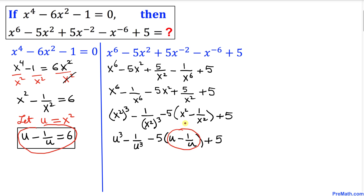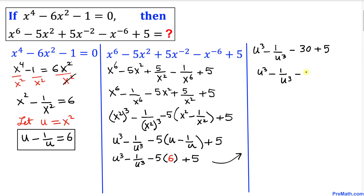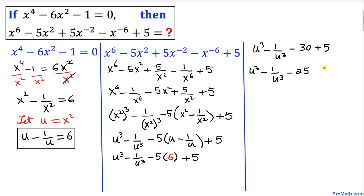We know that u - 1/u = 6, so replacing that gives us u³ - 1/u³ - 5×6 + 5, which simplifies to u³ - 1/u³ - 30 + 5, which is u³ - 1/u³ - 25. Let's call this expression (★). Now we need to find the value of u³ - 1/u³.